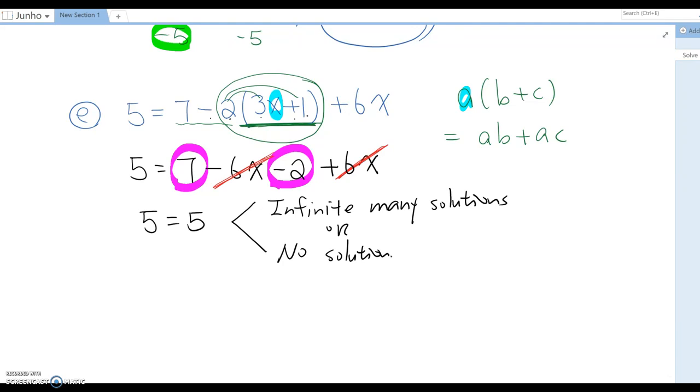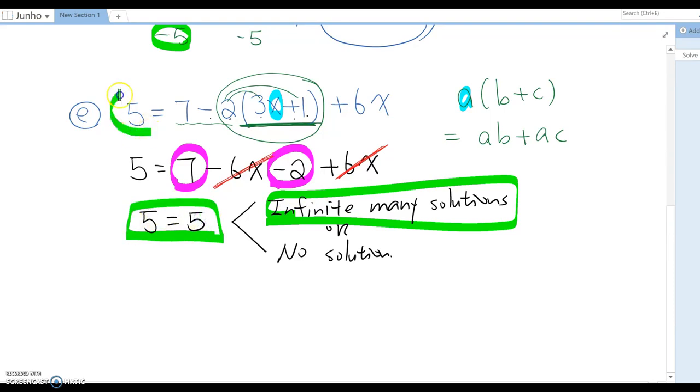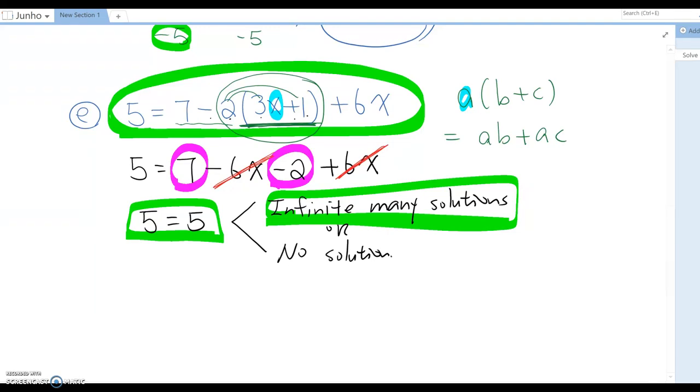The answer is infinite many solutions. The reason is 5 is 5, which means whatever you input here, any x value, this is always true. So therefore the answer becomes infinite many solutions.